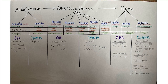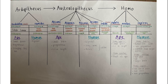We start with Ardipithecus, the oldest known group. First is Ardipithecus kadabba, or Ardi, thought to have lived about 5.6 million years ago, discovered by Sileshi Semaw in Ethiopia. Then Ardipithecus ramidus, thought to have lived 4.3 million years ago, discovered by Tim White, also in Ethiopia. Ape-like characteristics include a small brain, prognathous features, and a grasping big toe. The human-like feature is that they were thought to be bipedal.